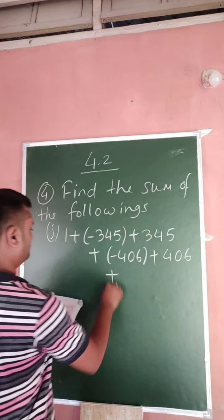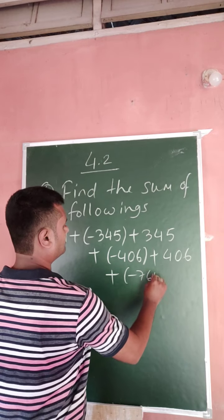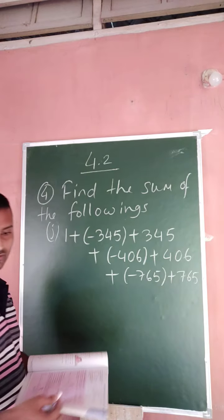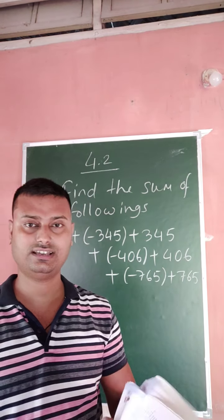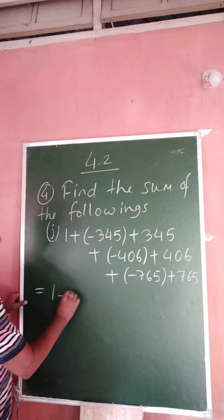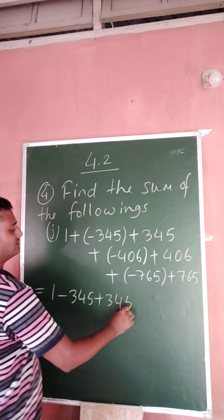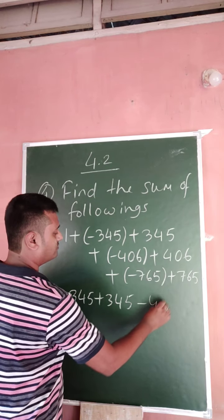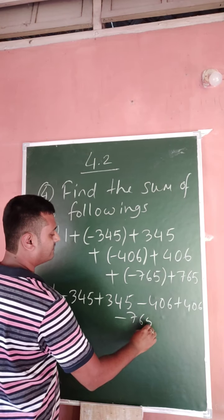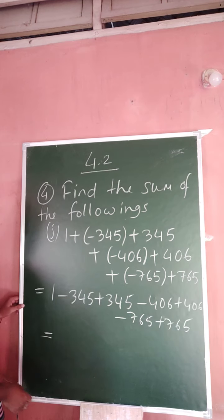So just remember, 1 minus 345 plus 345 minus 406 plus 406 minus 765 plus 765. You can directly cancel minus 345 plus 345.